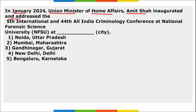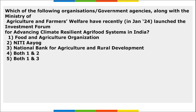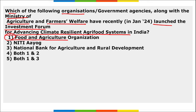Union Minister of Home Affairs Amit Shah inaugurated and addressed the Fifth International and 44th All India Criminology Conference at the National Forensic Science University in Gandhinagar, Gujarat. Also, the Food and Agriculture Organization (FAO) — an arm of the UN — along with NITI Aayog, launched the Investment Forum for Advancing Climate Resilient Agriculture and Food Systems in India.